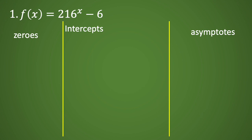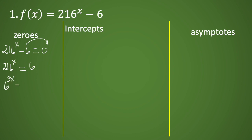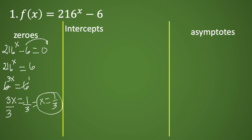For example number one, we have 216 raised to x minus six equals zero. Moving negative six to the other side, we have 216 raised to x equals six. To solve for the exponent, we need to make the bases the same. We can rewrite 216 as six raised to the third power, giving us six raised to 3x equals six raised to one. Dropping the bases, we have 3x equals one, so x equals one third. This is the zero of the function.